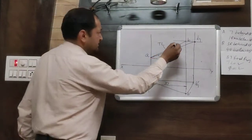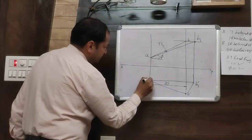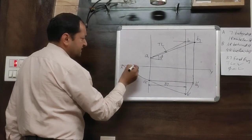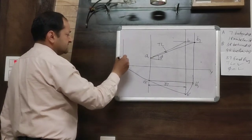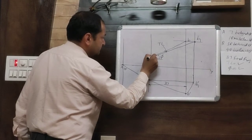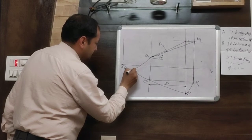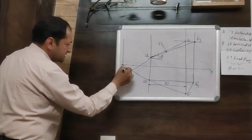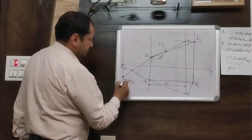Next, you have to draw the traces. For drawing the traces, extend the front view and top view. Extend the front view to where it meets the reference line XY — take this point as H dash. Draw a projector line at H dash. Then produce the top view until it meets this vertical line passing from H dash. That intersection point is the horizontal trace, named H.